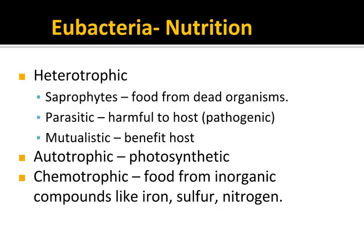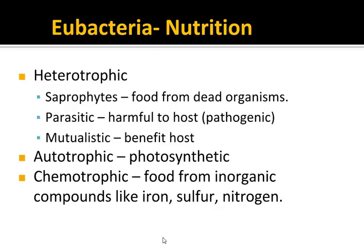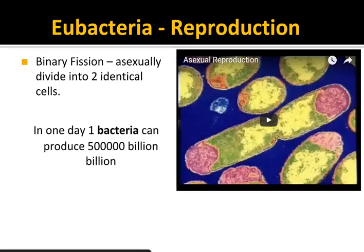Those are heterotrophic. Some bacteria are able to photosynthesize, so they can actually make their own food by converting sunlight into sugars — these are called autotrophic. And then there's another group of eubacteria that are kind of unique, and they can get energy by eating chemicals. They're able to obtain energy by eating things like iron-rich compounds, sulfur dioxide, or nitrogen-rich compounds. These are called chemotrophic bacteria. So in terms of how they get their food, heterotrophic, autotrophic, and chemotrophic are your three ways that bacteria can feed.